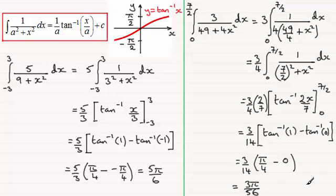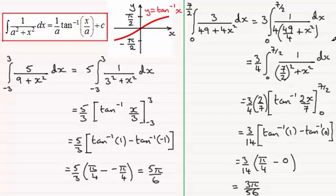I hope that's given you an idea of how we go about handling limits when we've got this particular standard integral. Just make sure the values you quote from your inverse tan lie between minus pi upon 2 and pi upon 2.